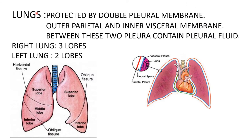The lungs, which are the most important organ of the respiratory system, are protected by a double layer of pleural membrane. This pleural membrane is formed of two parts: the outer one known as parietal pleura and the inner one known as visceral pleura. In between the two pleural membranes there is pleural fluid. The right lung is divided into three lobes and the left lung is divided into two lobes.